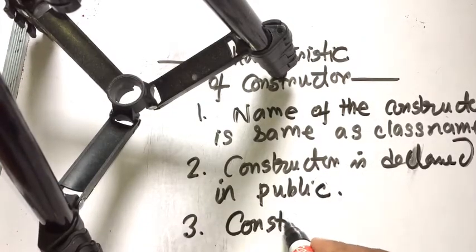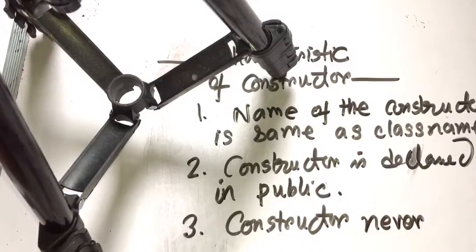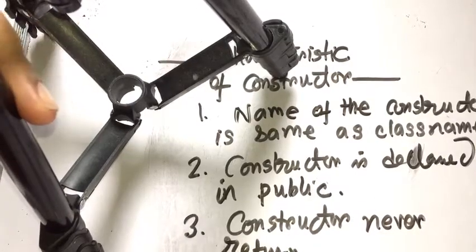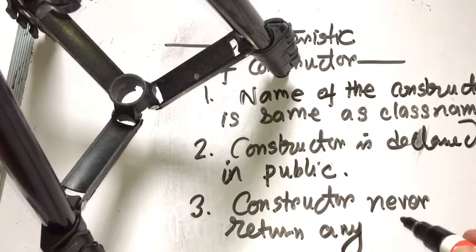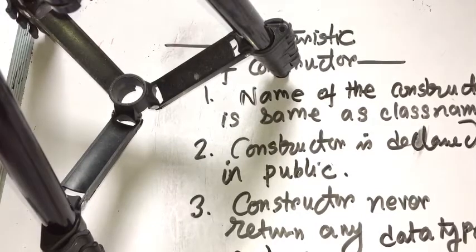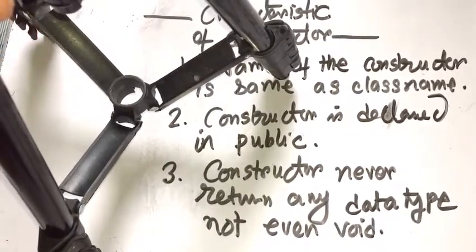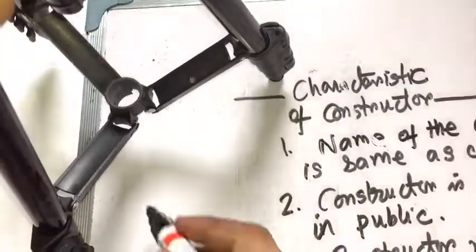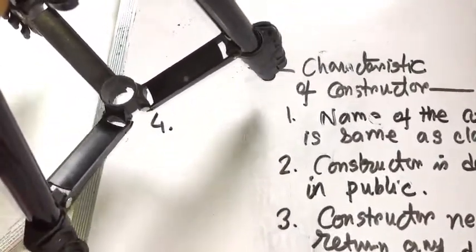Number three: constructor never returns any data type, not even void.